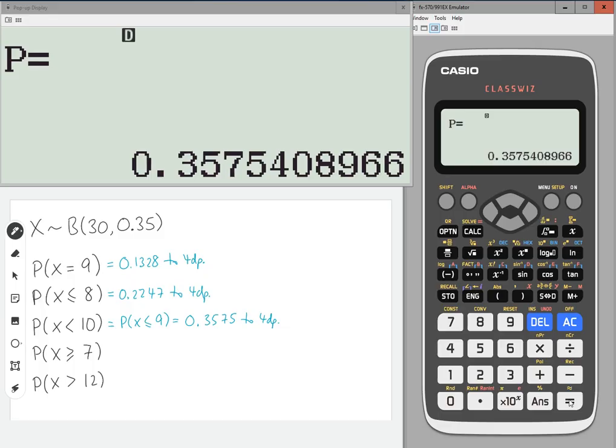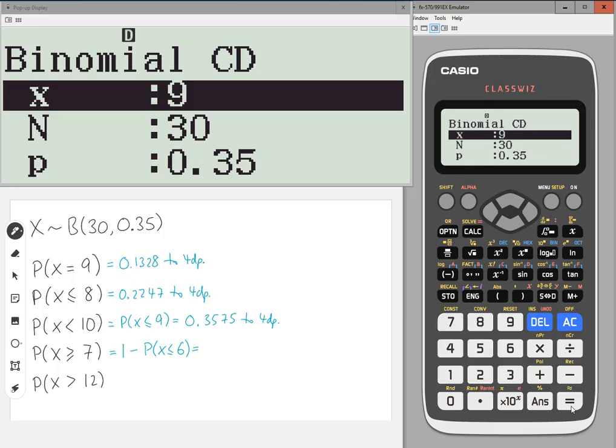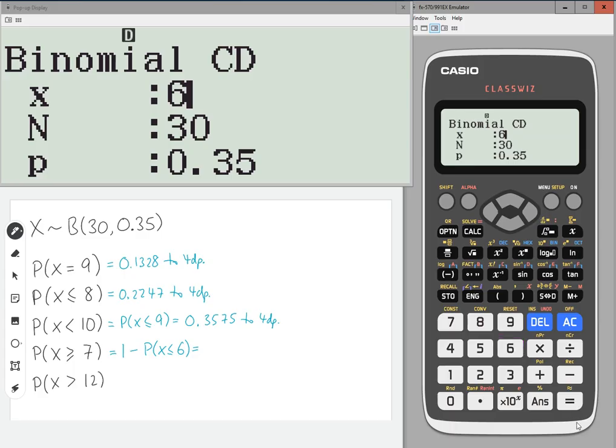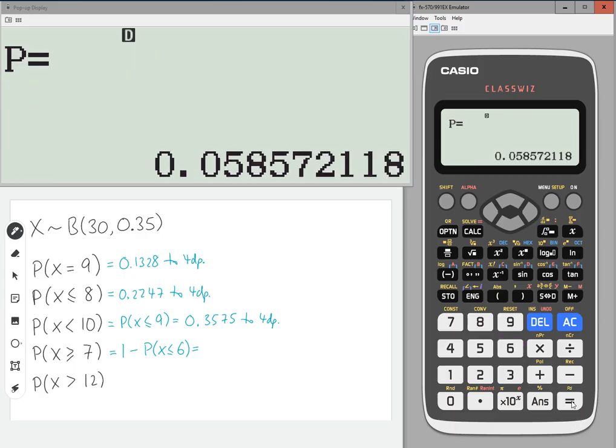Now, the next one is probability of x being greater than or equal to 7. Again, we cannot find that directly on our calculator. So, this is telling me that I want 7 and above. I do not want 0 to 6. So, I want to subtract 0 to 6, so less than or equal to 6, from 1. So, I'm going to go and change the x now to 6. Press equals again. And we want to do one take away of this. Unfortunately, the calculator cannot save this value, so I'm going to do one take away, and I'm going to write down the calculator display. So, 0.058572118.